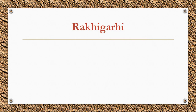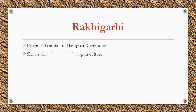Rakhigarhi was the largest Indus Valley civilization site and shows all three phases of Harappan culture. It was perhaps the provincial capital of the Harappan civilization.